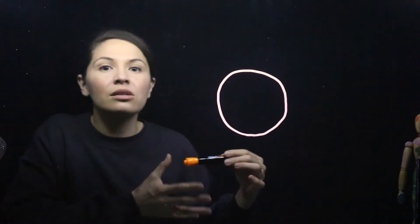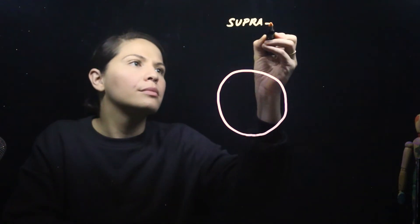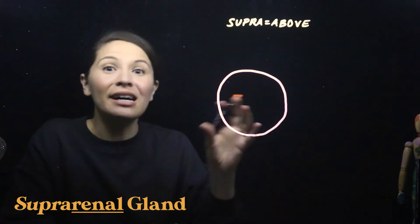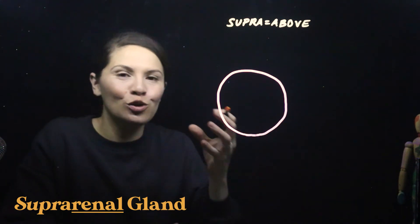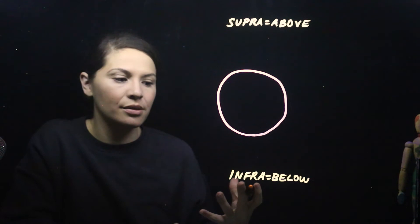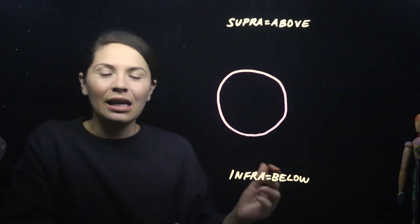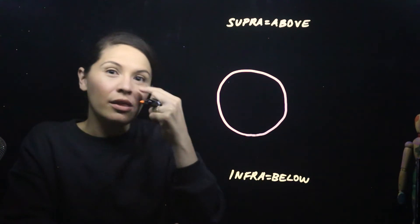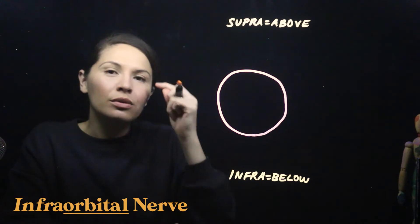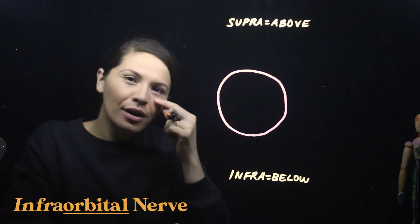An example of supra is the suprarenal gland — this tells us we have a gland above the kidney. The opposite of supra is infra, which refers to something below something else. An example of infra is a nerve that pops out underneath the eye socket, called the infraorbital nerve — a nerve underneath the orbit.